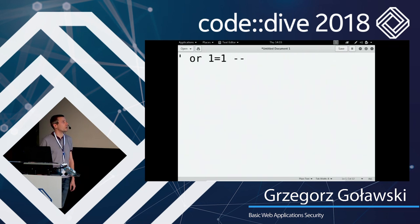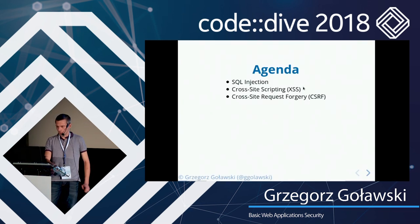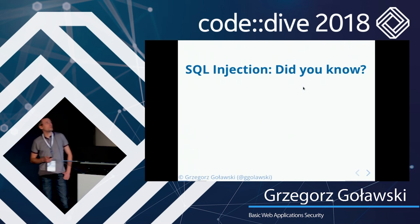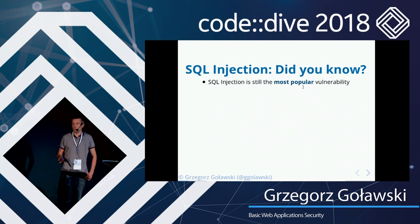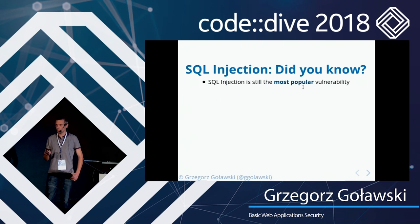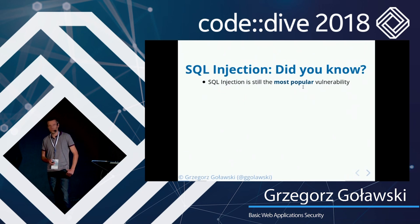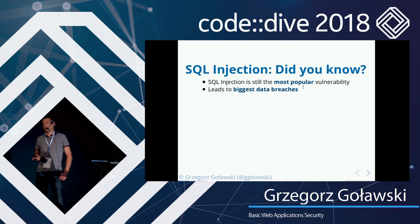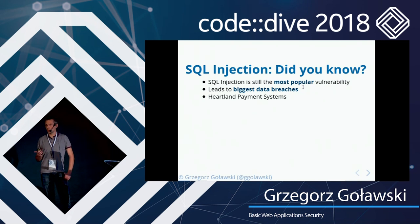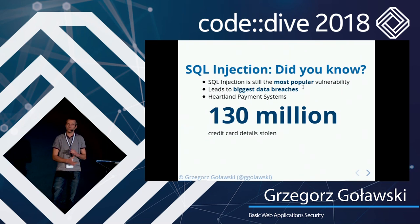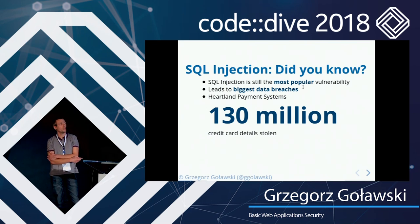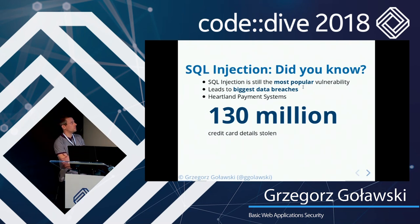Since the first topic is SQL injection, I typed: apostrophe OR 1=1 double dash. And it allowed me to log in. Did you know that SQL injection is a vulnerability known for 30 to 40 years, and it's still in 2018 the most popular vulnerability in web applications? It usually leads to the biggest data breaches in history — like in the Heartland Payment Systems, where a single SQL injection vulnerability led to 130 million credit card details being stolen.